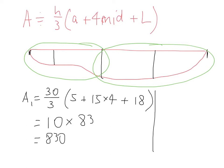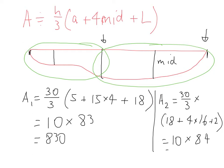Our second application, A2 is 30 over 3. Now this value here becomes our first one and that's our last one and that's our middle. So it ends up being our first function value is 18 plus 4 times 16 plus 2, and that ends up being 10 multiplied by 84 which is 840. Now if you add those two together, you'll get 1670.